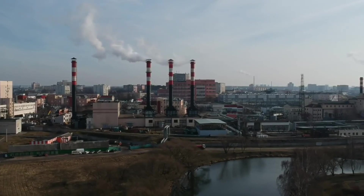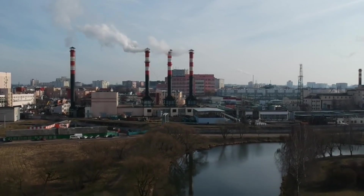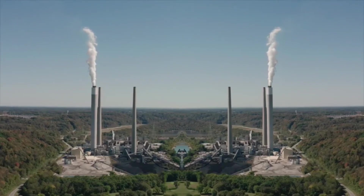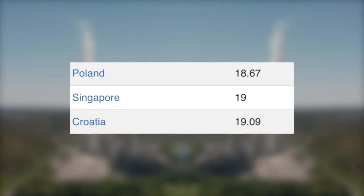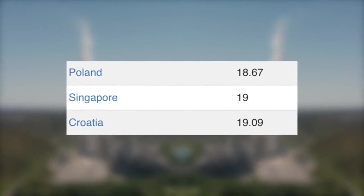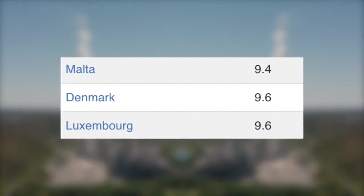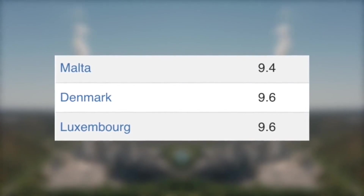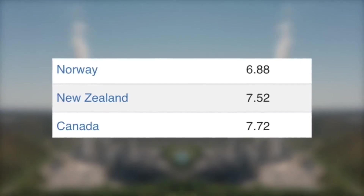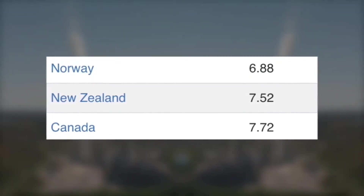And finally for quality of living, let's take a look at how these countries rank on the Clean Air Index. We all know the devastating impacts of pollution upon humans, so the higher up on this list, the cleaner their air is. To no surprise, the most densely populated out of the three — Singapore — comes in 47th place, above Croatia and below Poland. Next up we have Denmark, which comes in as having the 15th cleanest air in the world, behind Malta and above Luxembourg. And finally, New Zealand with the 8th cleanest air in the world, behind Norway and above Canada.